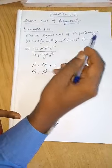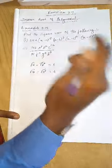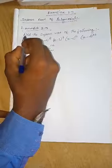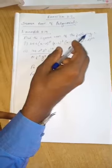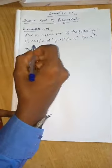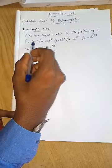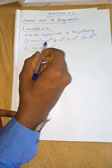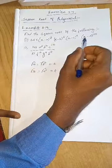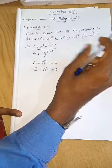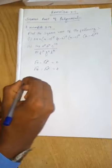Now let's see Example 3.19: find the square root of the following. First question: square root of 256 times (x minus a) power 8, times (x minus b) power 4, times (x minus c) power 16, times (x minus d) power 20.